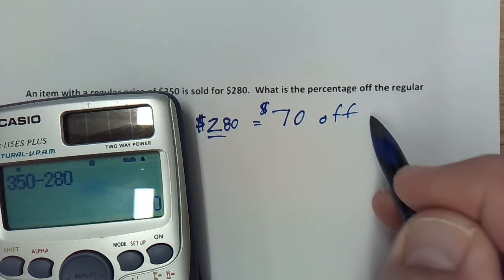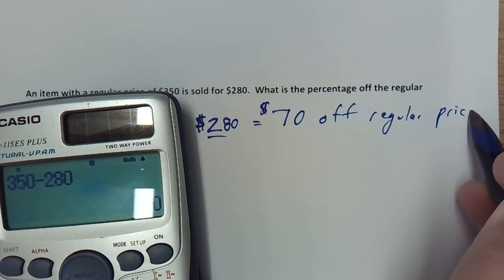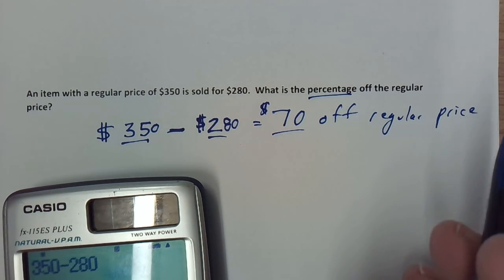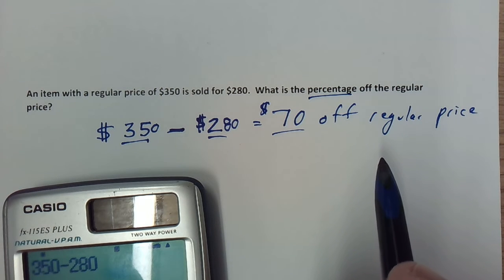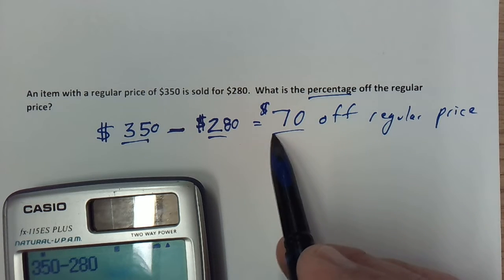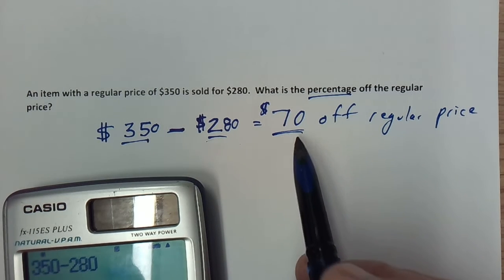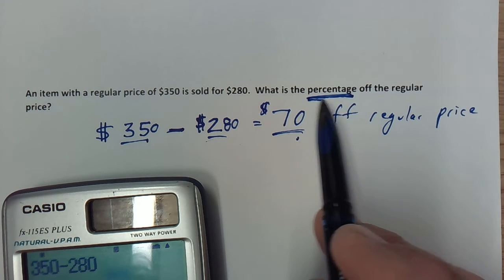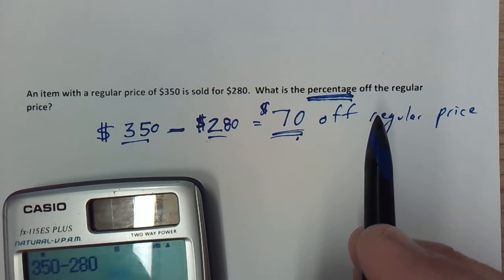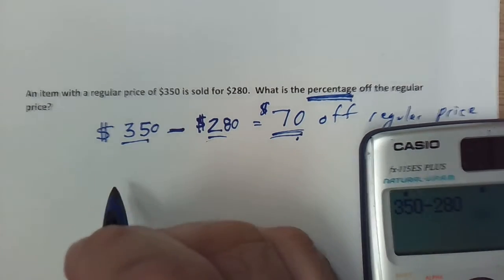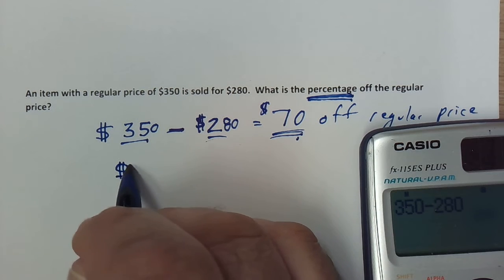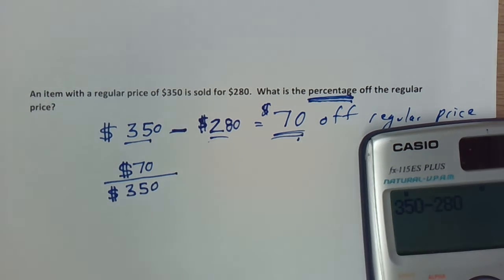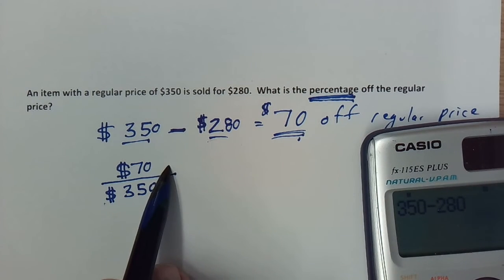So it is $70 off the regular price, but that is not what the question is asking — the question wants to know the percentage off. We only have the dollar amount off. Be careful, because sometimes on a multiple choice test, $70 will be one of the answers and students will choose it thinking they're done. But we want to know the percentage off, not the dollar amount. So we're going to take the dollar amount off — $70 — and divide it by the regular full price.